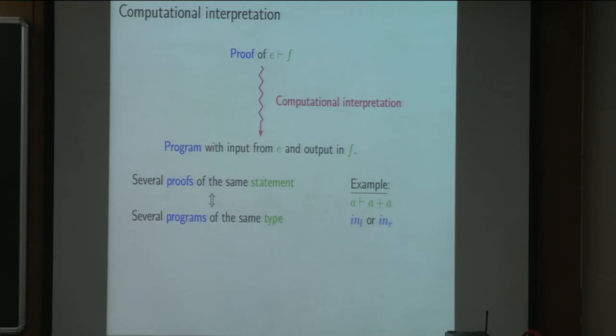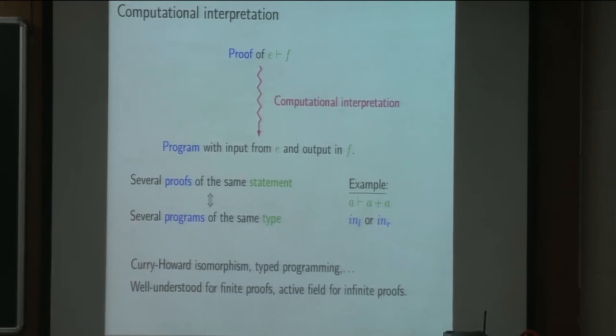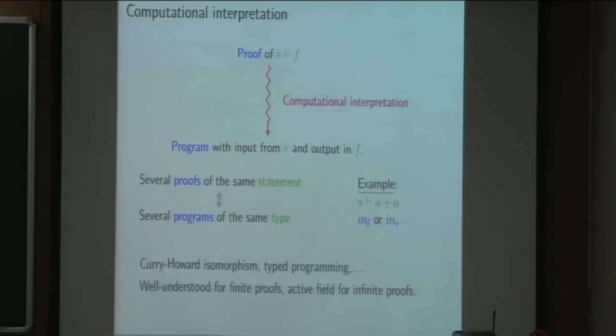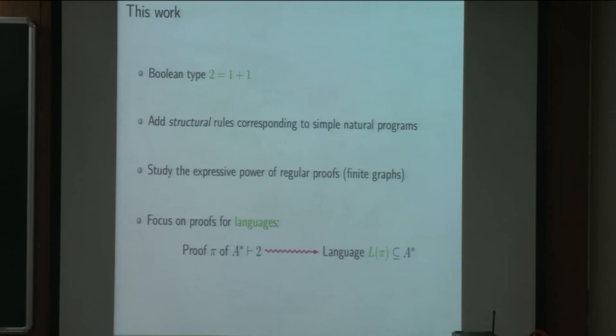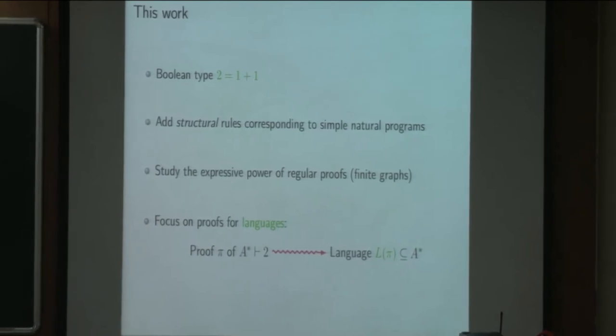Either we can take the leftmost part or the rightmost A, and it exactly corresponds to the two programs, the right injection and the left injection. This is a field that has been a lot investigated in the domain of finite proofs, with for instance the Curry-Howard isomorphism and type programming. And this is really an ongoing work for cyclic proofs. In this work, we introduce a Boolean type which corresponds to the sum one plus one. And we add to the original proof system some structural rules that correspond to simple natural programs. And we want to study the expressive power of such proofs.